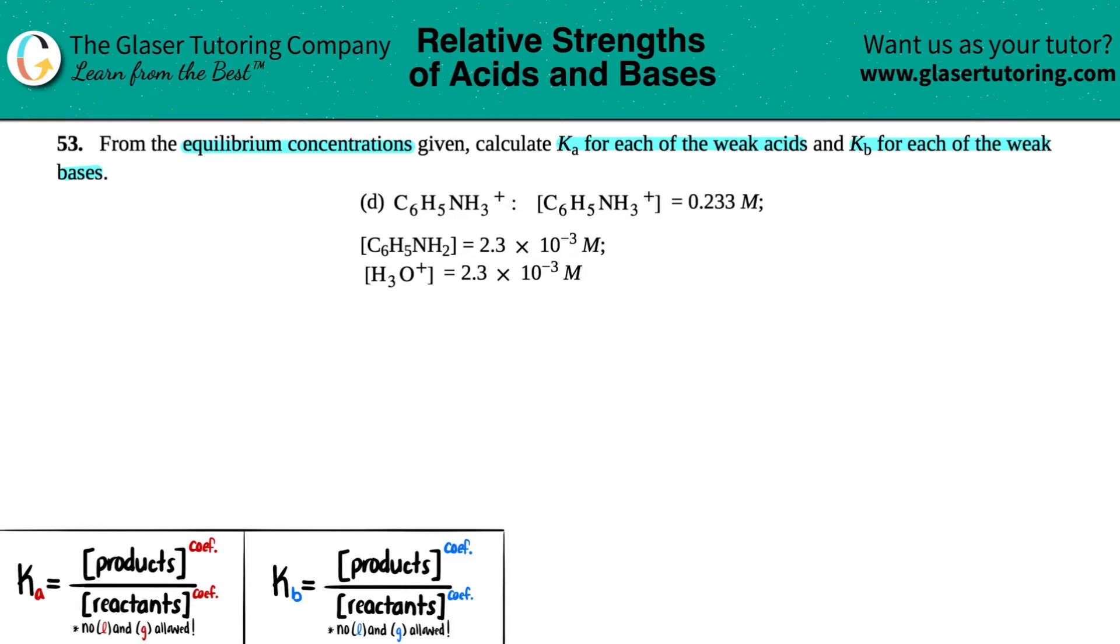So in this case, they tell us that we're working with C6H5NH3+. And then they tell us at equilibrium, I have the C6H5NH3+ concentration of 0.233 molarity. We have C6H5NH2 and H3O+ as 2.3 times 10 to the negative 3 molarity. So the question is, are we going to be a weak acid or a weak base?